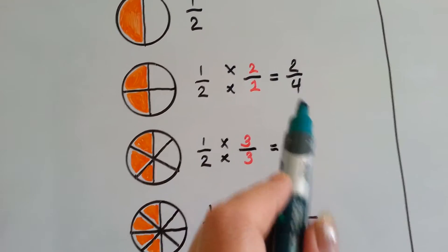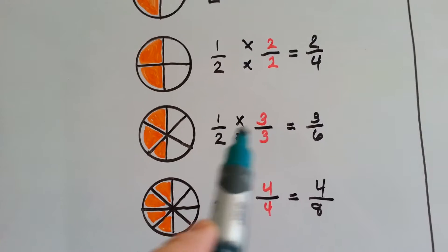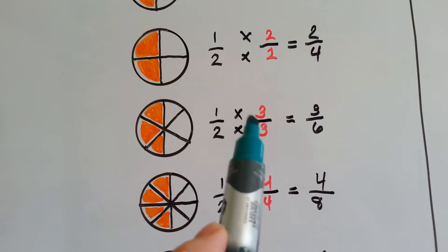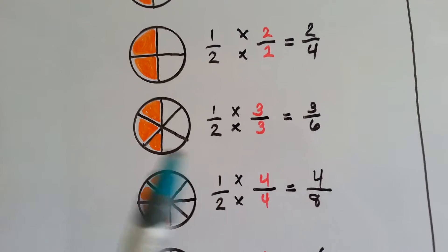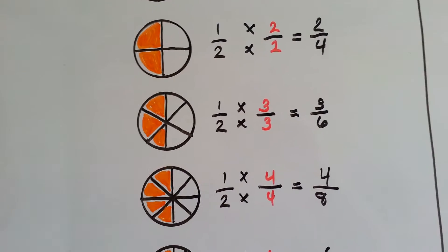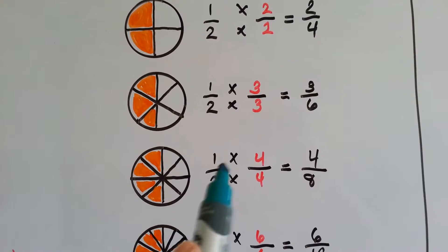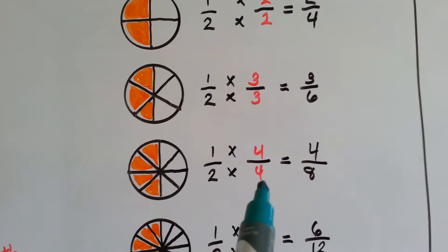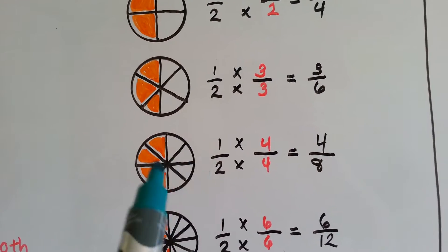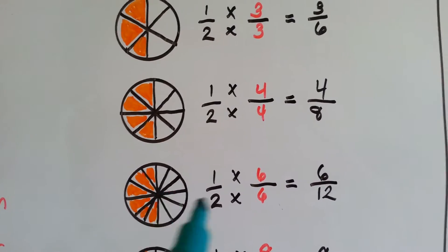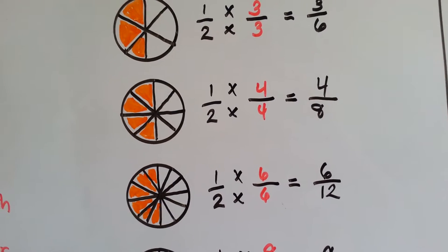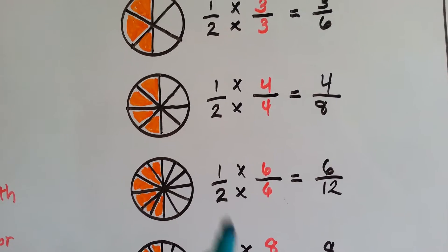Now if we multiply the numerator and denominator by three, we get three-sixths. One times three is three, and two times three is six. Three are orange out of a total of six, so three-sixths is equal to a half. If we multiply the numerator and denominator by four, we get four-eighths — an equivalent fraction. Four-eighths is the same thing as one-half. If we multiply by six, we get six-twelfths. Six-twelfths is equal to one-half.